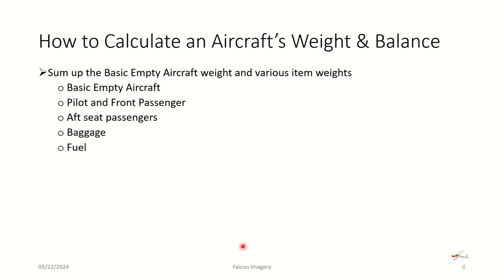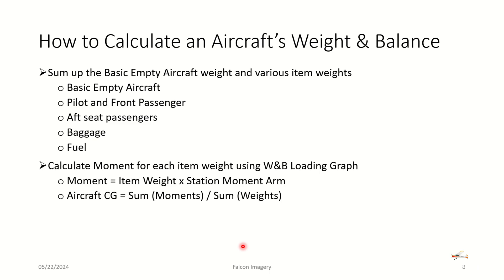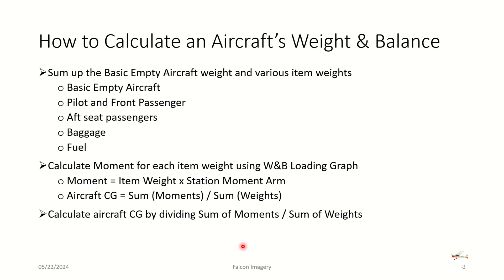To calculate the aircraft's weight and balance, we sum up all of the items in the aircraft including the basic empty weight, pilot and front passengers, aft seat passengers, baggage, and fuel. Then we calculate the moment for each item using the weight and balance loading graph, or by doing the multiplications ourselves — multiplying the item weight times the station moment arm. We get the center of gravity by taking the total sum of moments divided by the total sum of weights. We then take that CG value and see if it fits within the envelope in the POH, ensuring we are within the forward and aft limit range.